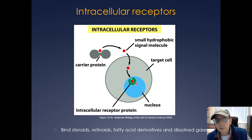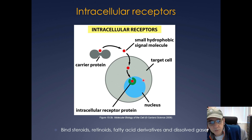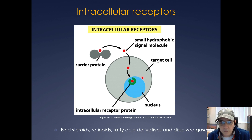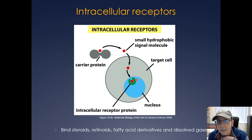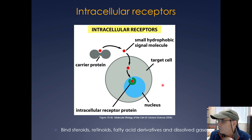Intracellular receptors are often hormone receptors — hormones like steroids, retinoids, fatty acid derivatives, and even dissolved gases, as we'll see in a moment.